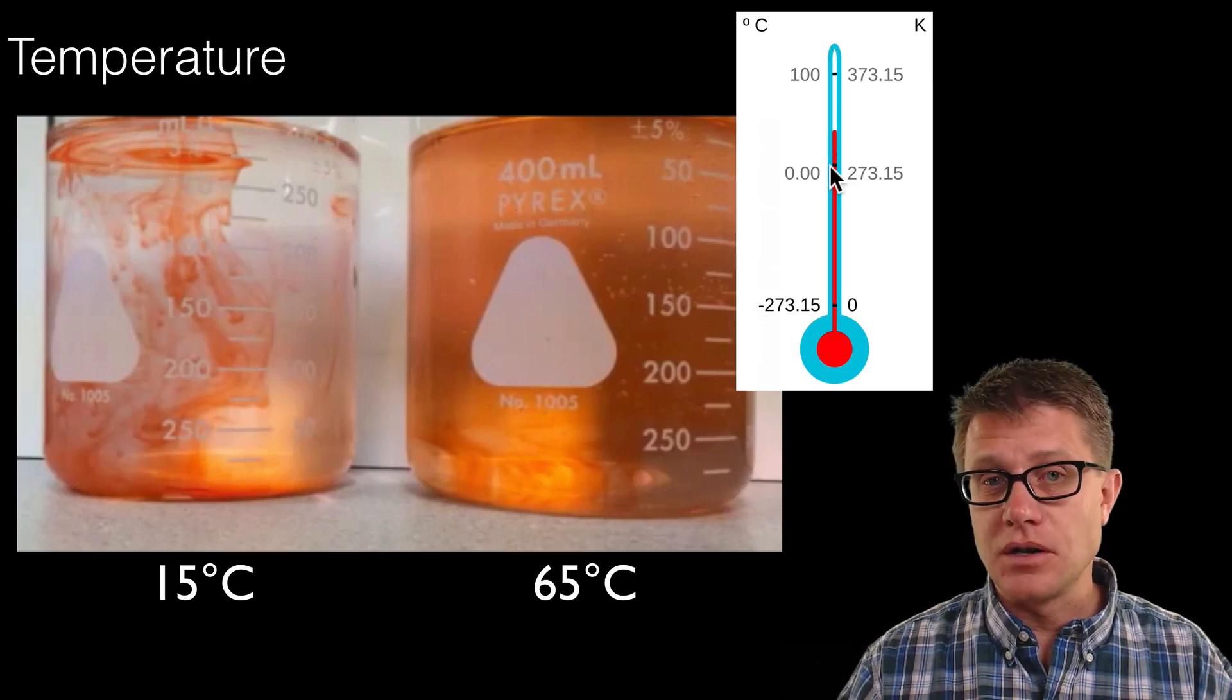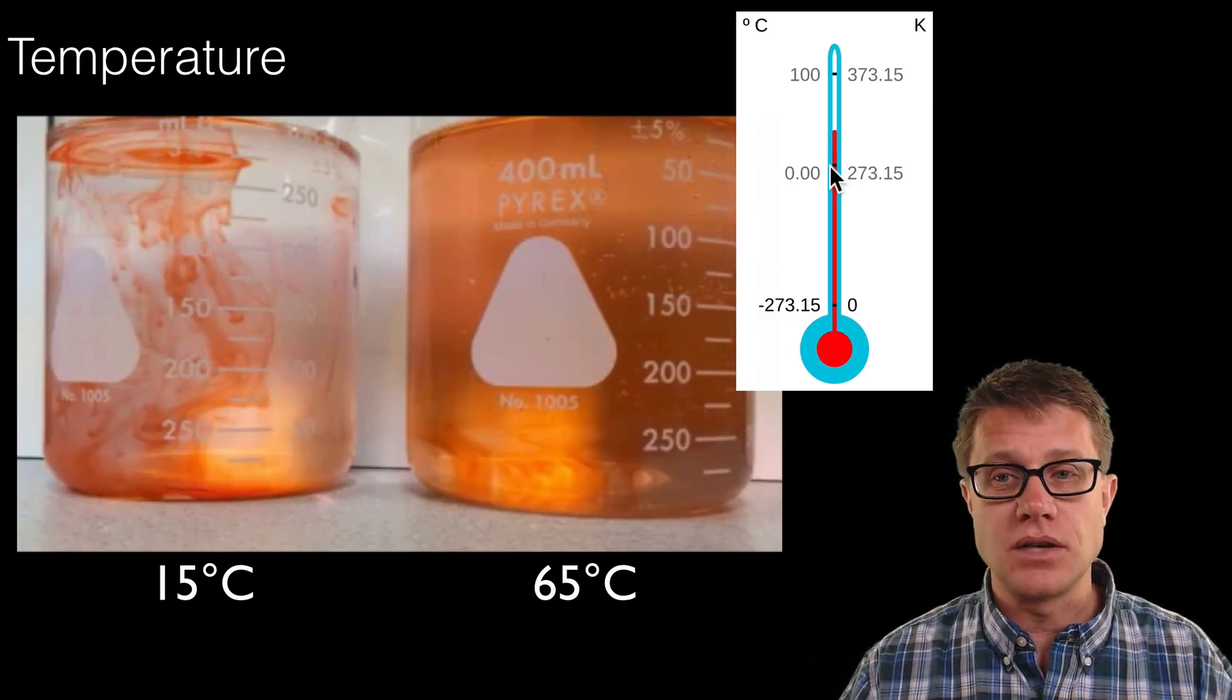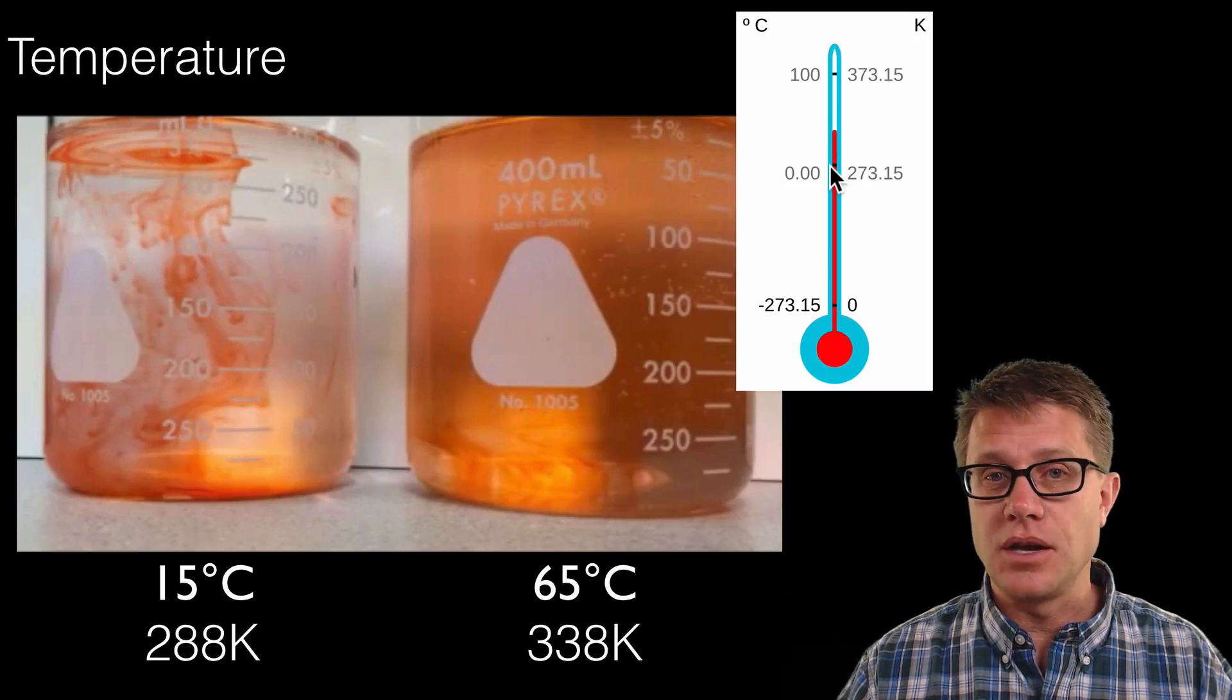So with the Celsius scale, zero is going to be freezing. But what happens if we slow those molecules to a stop? That is going to be absolute zero. And we use the Kelvin scale to do that. And so remember if you are ever converting a temperature to Kelvin, which you will have to do with any of these problems, all you do is simply add 273 to it. So that would be 288 Kelvin on the left, 338 Kelvin on the right.